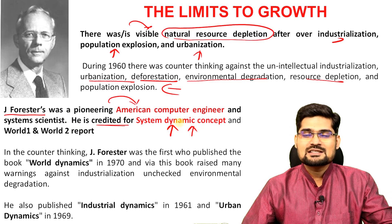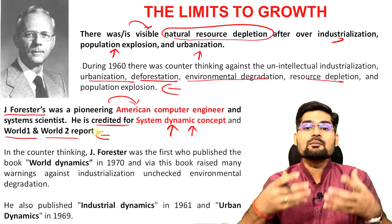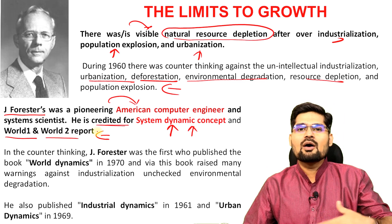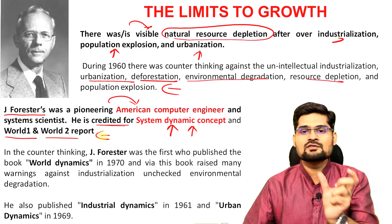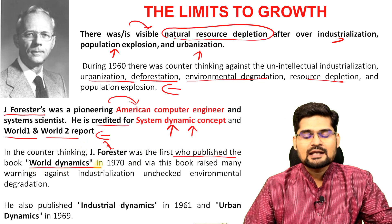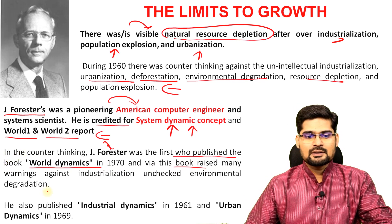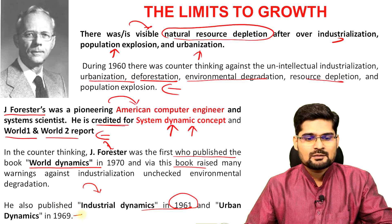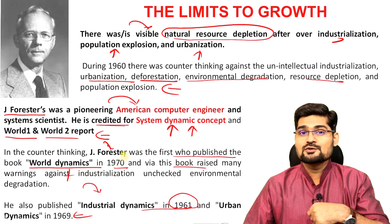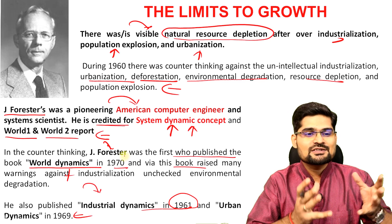Forrester is credited for the system dynamics concept evolution and the World One and World Two reports. Using the latest computer-based technology and simulations, he formulated two reports — World One and World Two — talking about how humanity is progressing and what the future holds. He was the first to publish the World Dynamics book in 1970, via which many questions were put forth around world academia. He published Industrial Dynamics in 1961, Urban Dynamics in 1969 and World Dynamics in 1970 — so three works which came before Limits to Growth. He was effectively the father of this concept.